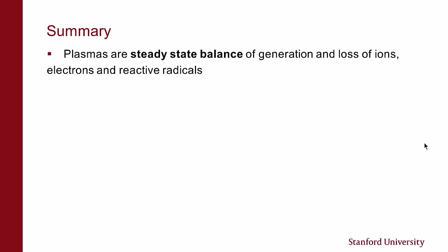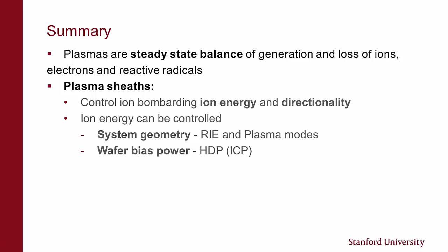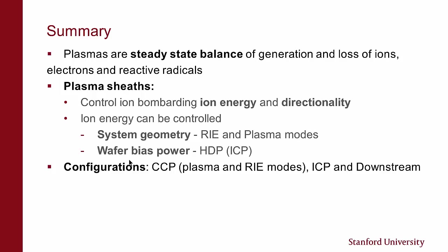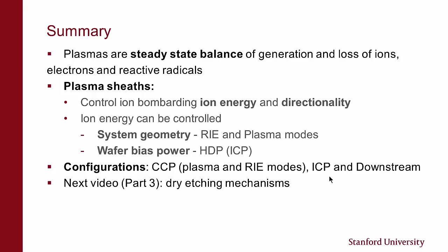Summary: Plasmas are a steady state balance between generation and loss of ions, electrons, and reactive radicals. Plasma sheaths control ion bombardment — ion energy and directionality. Ion energy can be controlled by the geometry of the system in RIE or plasma mode, or by wafer bias in an ICP configuration. The configurations include CCP with capacitive coupling and parallel plate configurations, ICP, and downstream. In the next video, I'm going to talk about dry etching mechanisms. Thank you.